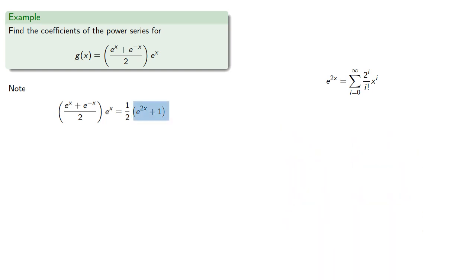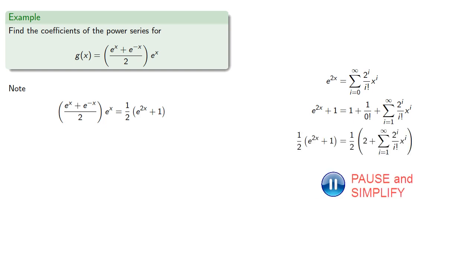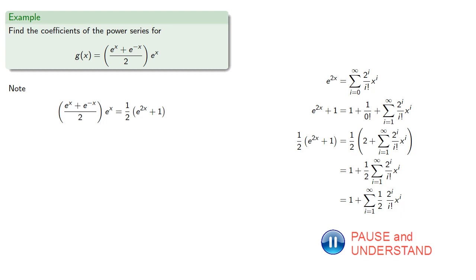Now, we want to add 1 to e to the 2x, and so what we can do is split off the constant term of our power series and add 1, and then we want to multiply everything by 1 half. That gives us, we can move the factor of 1 half inside the summation and simplify.